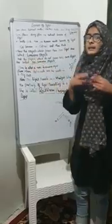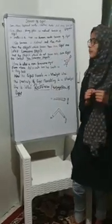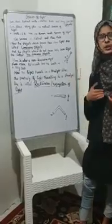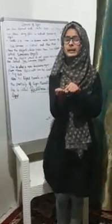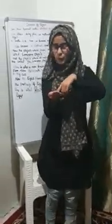There are two sources of light: first is natural and second is man-made. The objects which produce their own light are called luminous objects, and the objects which do not have their own light are called non-luminous objects. For example, a non-luminous object, when light falls on it, is reflected in different directions.